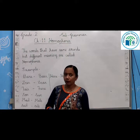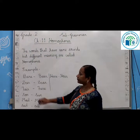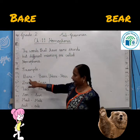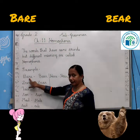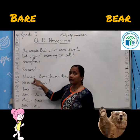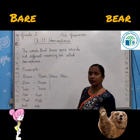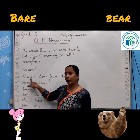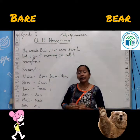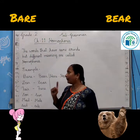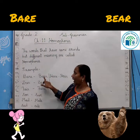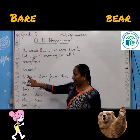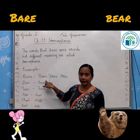Yeh bahut chota sa topic hai, but you have to learn what homophones are. Some examples are given here. B-A-R-E — 'bare', and B-E-A-R — also 'bear'. Notice the spelling is different. B-A-R-E means barefoot — like when we go to a temple, we remove our shoes and walk nangepao. And B-E-A-R is a wild animal living in a jungle — bhaalu. So the meaning is completely different and the spelling is different, but the pronunciation is the same.